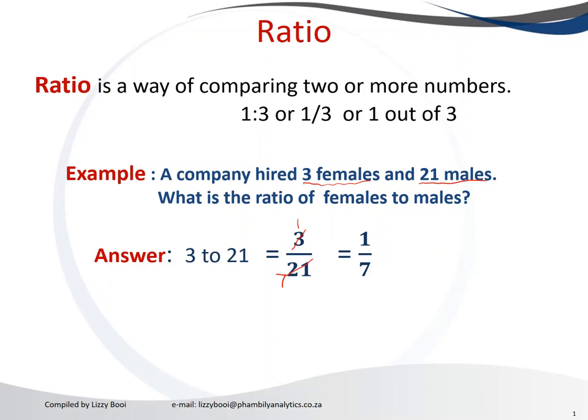Or we can represent it in written form. The ratio will be 1 to 7. Or because we can also divide the fraction and say 1 divide by 7, which gives us 0.143. Therefore it means for every 0.143 female they hire one male.